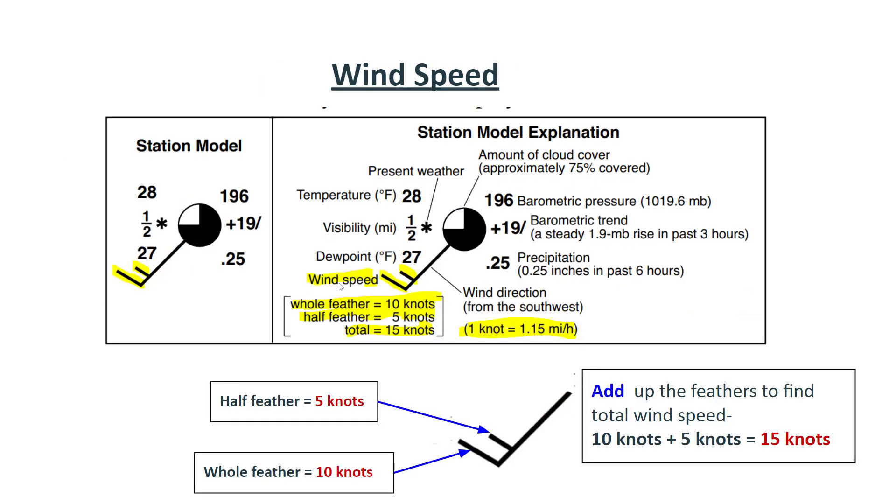Next, we'll talk about wind speed. Wind speed is represented by these tiny lines kind of protruding out of the end of the station model. And these tiny lines represent wind speed and they have the unit of knots. One knot is 1.5 miles per hour and a knot is a very common unit we use for wind speed.